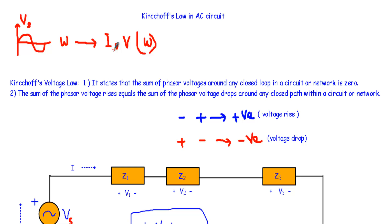Therefore, we cannot simply take the algebraic sum of voltages if I talk about Kirchhoff's voltage law, or take the algebraic sum of currents if I talk about Kirchhoff's current law in the case of an AC circuit. Rather, we will take the sum of the phasors of voltages for KVL, or the sum of the phasors of currents for KCL.